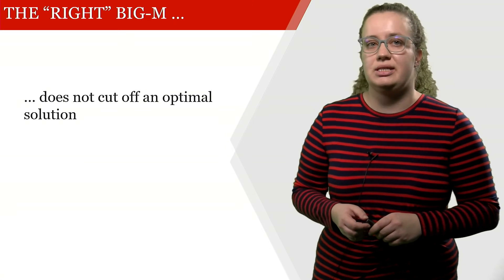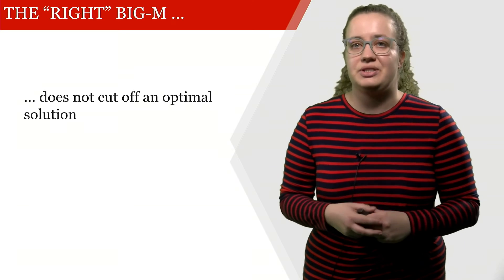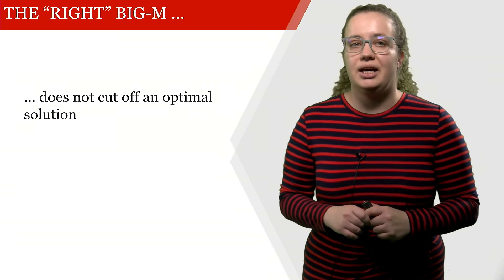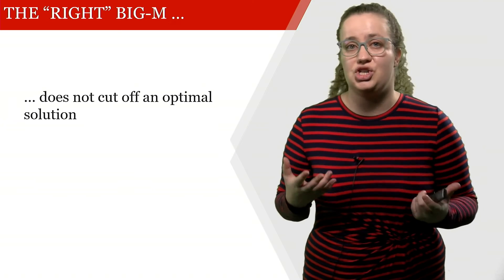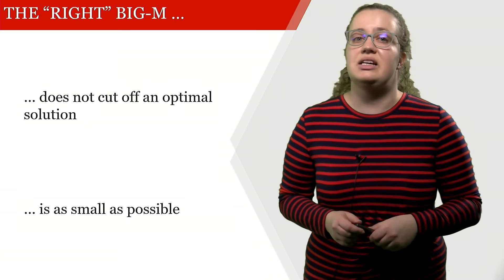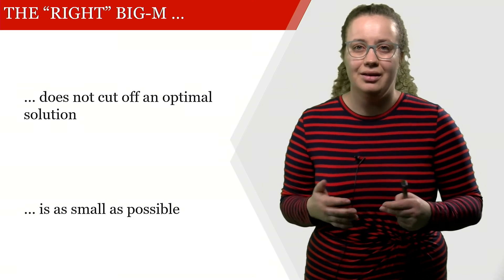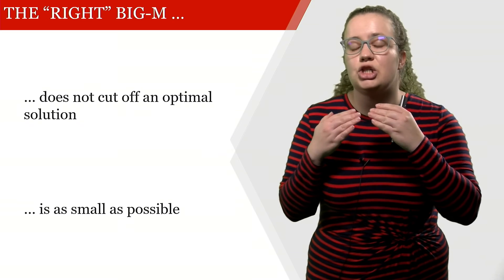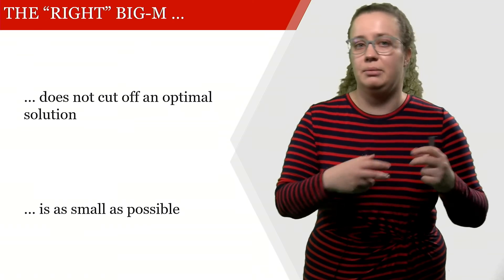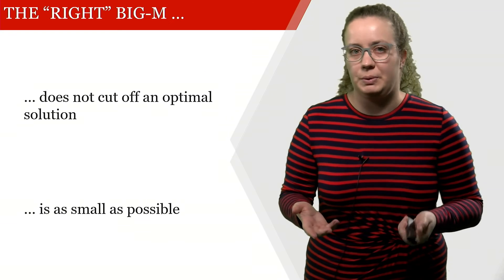This of course gives us some problems, which is setting the right M. First of all, the right M obviously does not cut off any optimal solution. If we would set our M to 1, then the most that we can ship would be 1, which is not what we want. But on the other hand, M should be as small as possible for computational reasons. If our M is too big, it takes us a lot longer time to solve this mixed integer linear program.